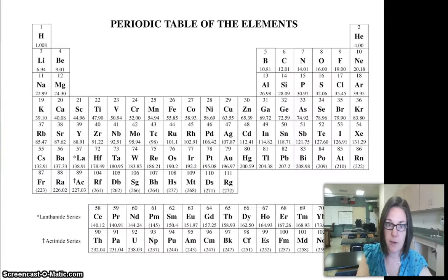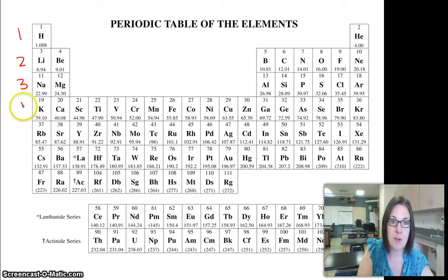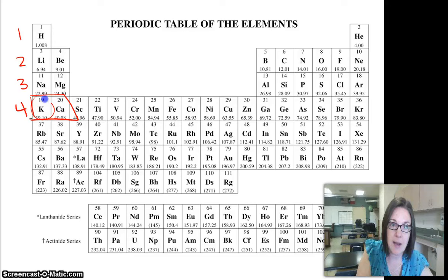If we hop over here to the periodic table really quick, here's our first energy level, second, third, here's our fourth energy level. This is our S block, so potassium would be 4S1.